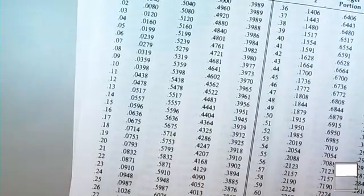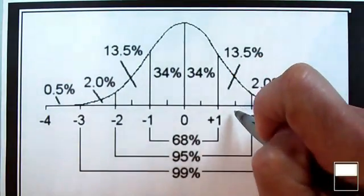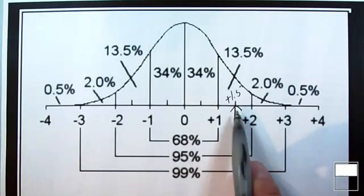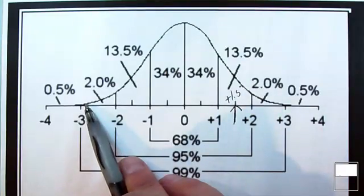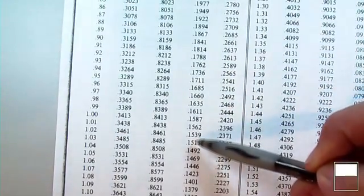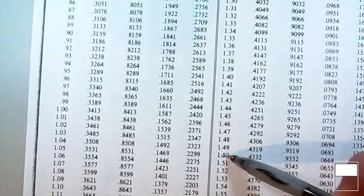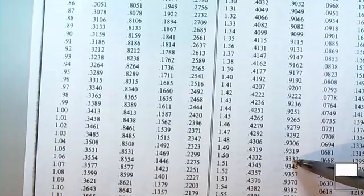Let's say we wanted to know what proportion of the normal curve is below a z-score of plus 1.5. Here we have plus 1 and plus 2, and 1.5 is between them. You're on the right side of the normal curve, the larger portion is to your left, and the smaller portion is to your right — so we're concerned with the larger portion. We find a z-score of plus 1.5 on the second page of the table, and it tells us that approximately 93% of the scores are below it and about 7% are above it.